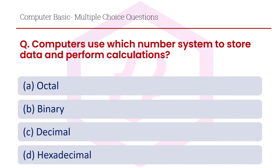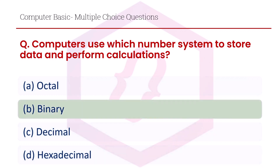Computers use which number system to store data and perform calculations? Option A octal, option B binary, option C decimal, option D hexadecimal. The right answer is option B, binary.